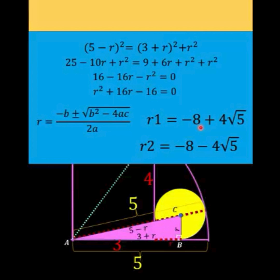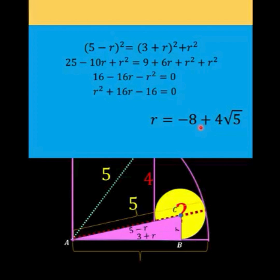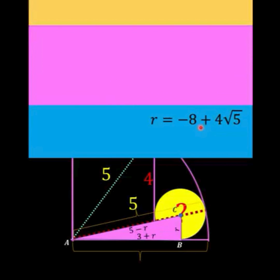Since we now have the value of the radius of the small circle we can now compute for its area. So area is equal to πr² where r is equal to -8 + 4√5.